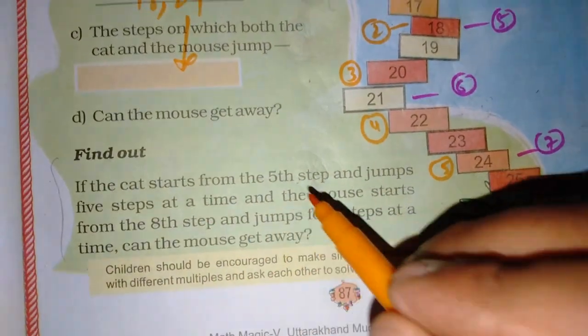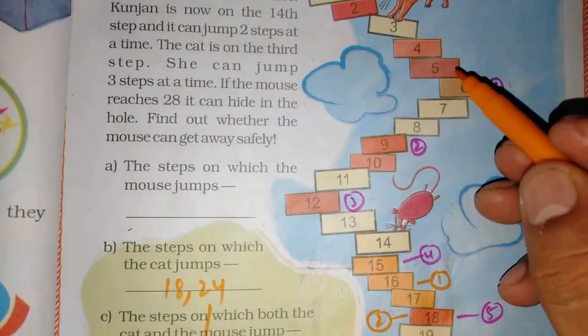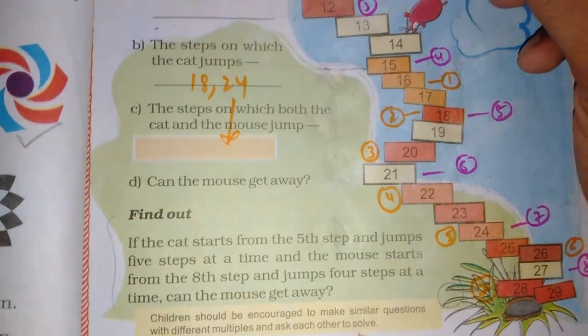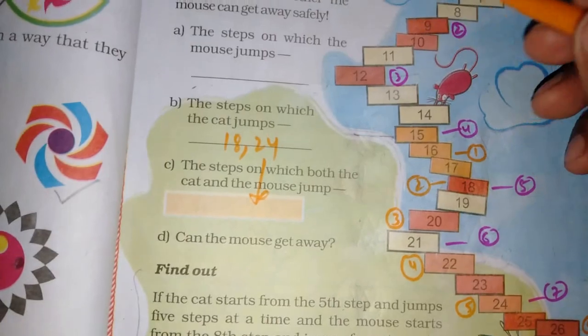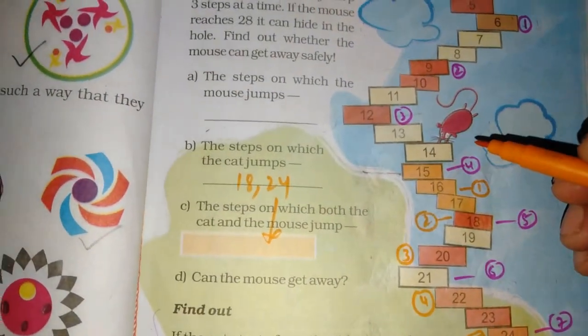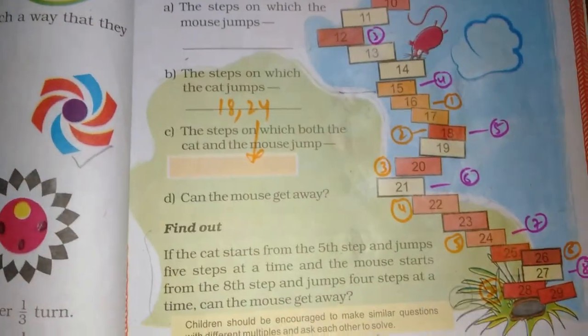If the cat starts from the 5th step. Now, he is saying that the cat starts from the 5th step. Is it clear? If the cat starts from the 5th step, and jumps are 5 steps, and this time, he will give him a few jumps. 5. That means, he will give him a table. Where will he go? 10, 15, 20, 25. And he will go to the 30. He will go to the 25th step.